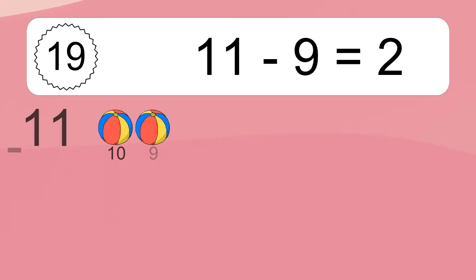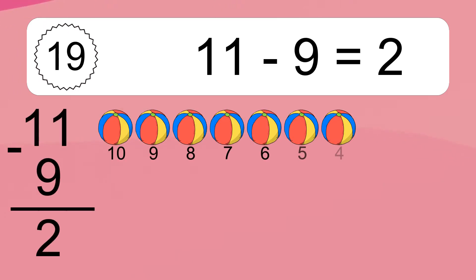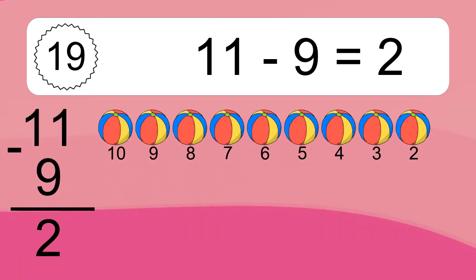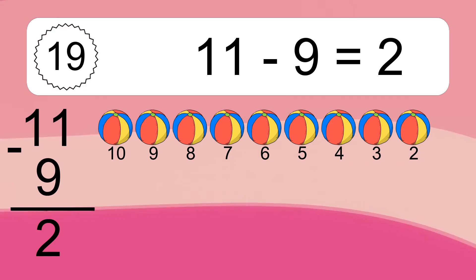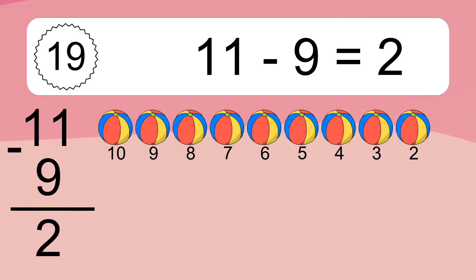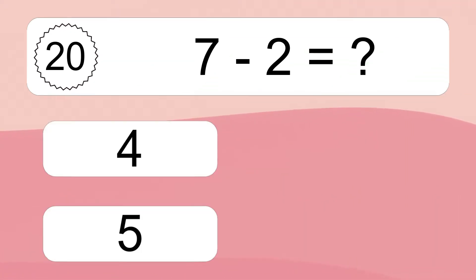11 minus 9 equals 2. Let's count it: 10, 9, 8, 7, 6, 5, 4, 3, 2. 7 minus 2 equals what?